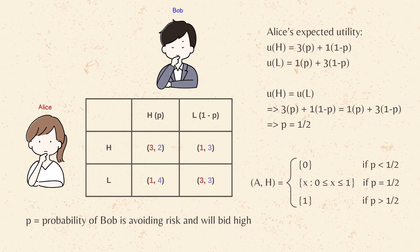Whereas if P is equal to half, then it is indifferent for her whether to bid high or low.